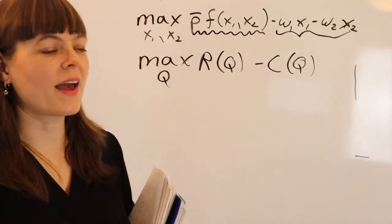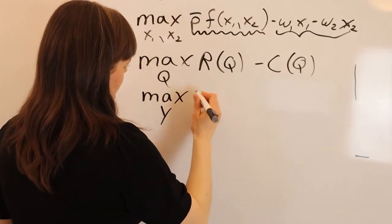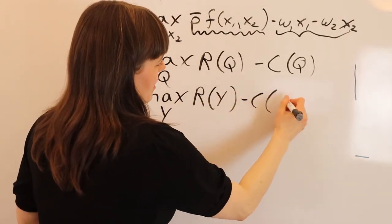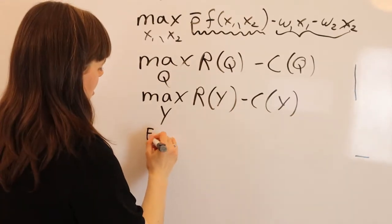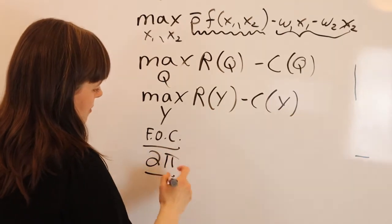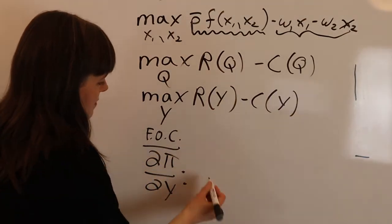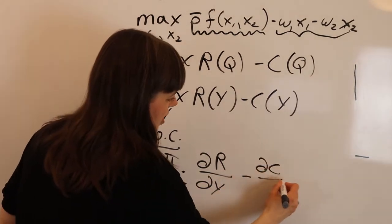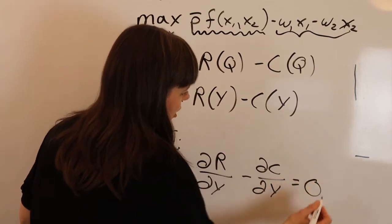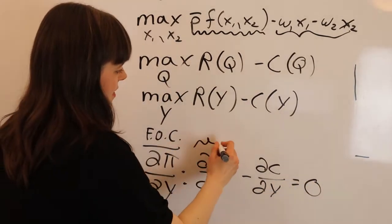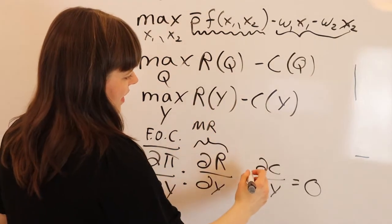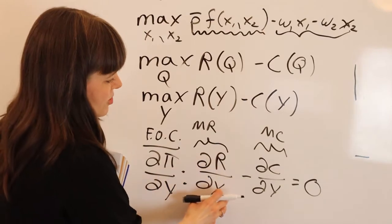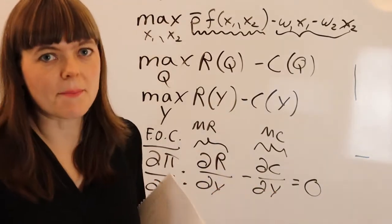The textbook uses Y for quantity, so this is the textbook's version: revenue as a function of output, minus cost as a function of quantity. We take the first order conditions of that, giving us the derivative of the profit function with respect to output. That gives us the derivative of the revenue function with respect to quantity minus the derivative of the cost function with respect to quantity equals zero. This derivative of the revenue function is marginal revenue, and the cost derivative is marginal cost — so marginal revenue equals marginal cost pops out of our monopoly model.